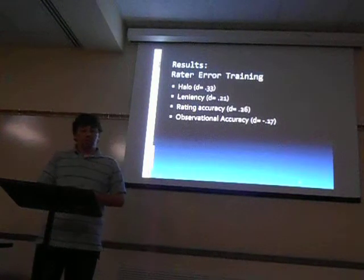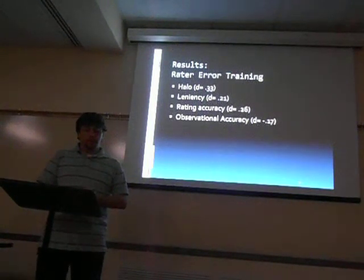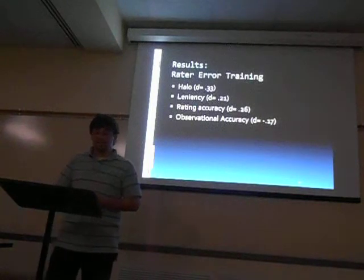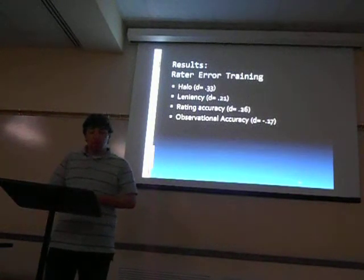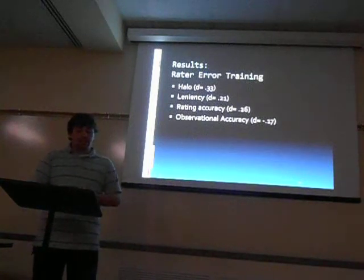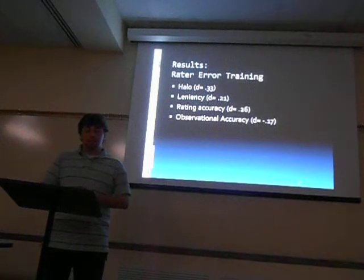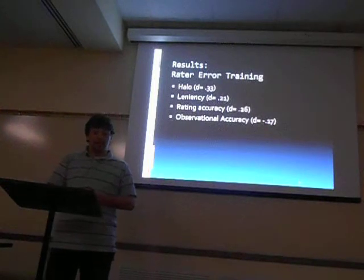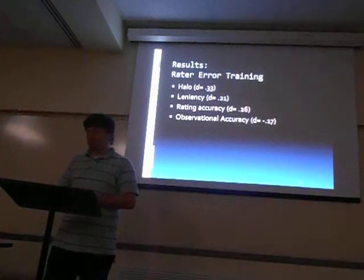The study found rater error training appears to be moderately effective at reducing halo error with an effect size of 0.33, and a little bit less effective at reducing leniency errors with an effect size of 0.21. It also indicated a moderate effect size of 0.26 for increasing rating accuracy. However, there was a small negative effect size of 0.17 for observational accuracy, which seems to indicate that this training is a little bit less effective at increasing observational accuracy.